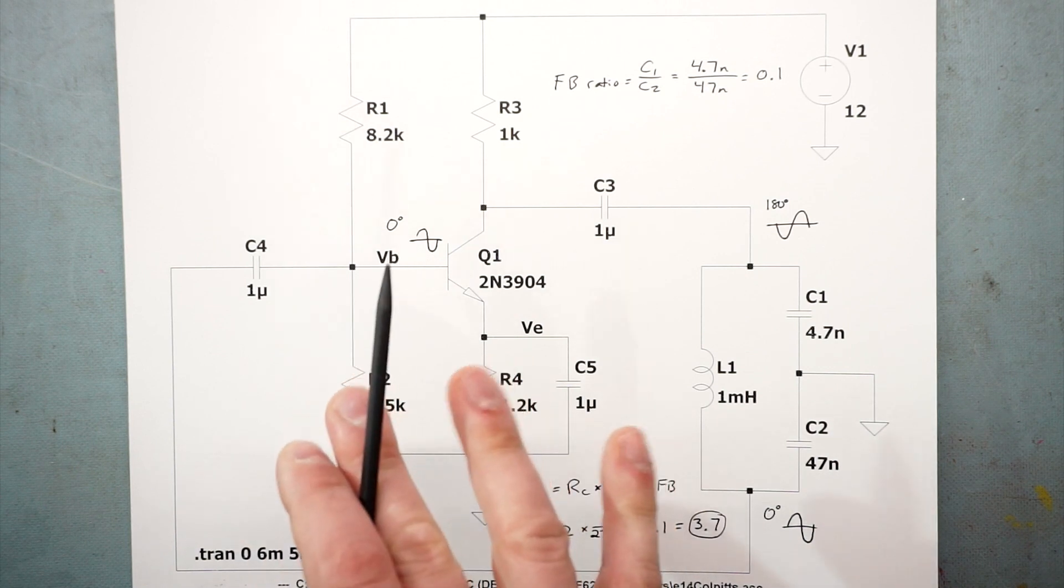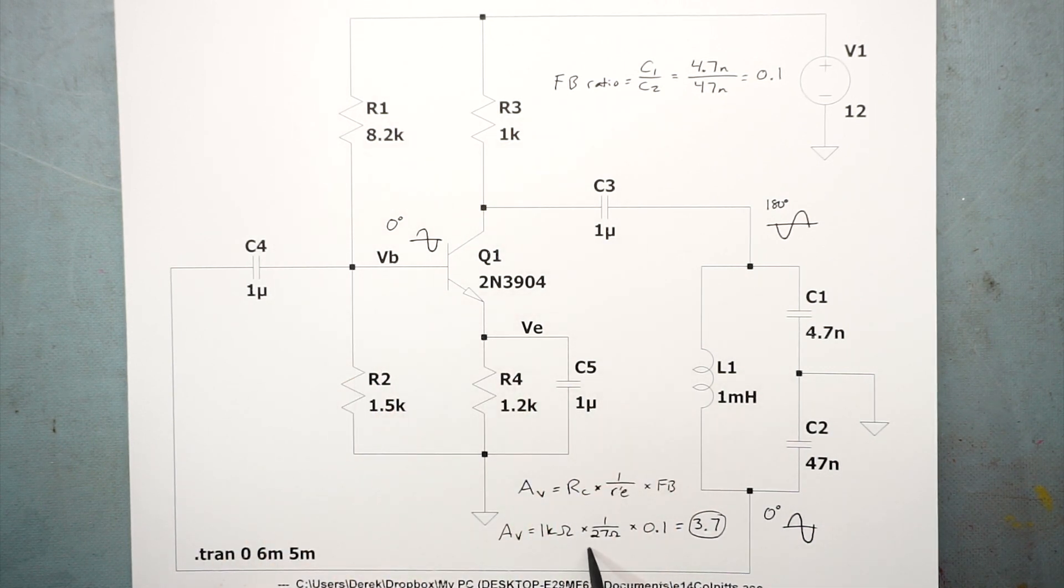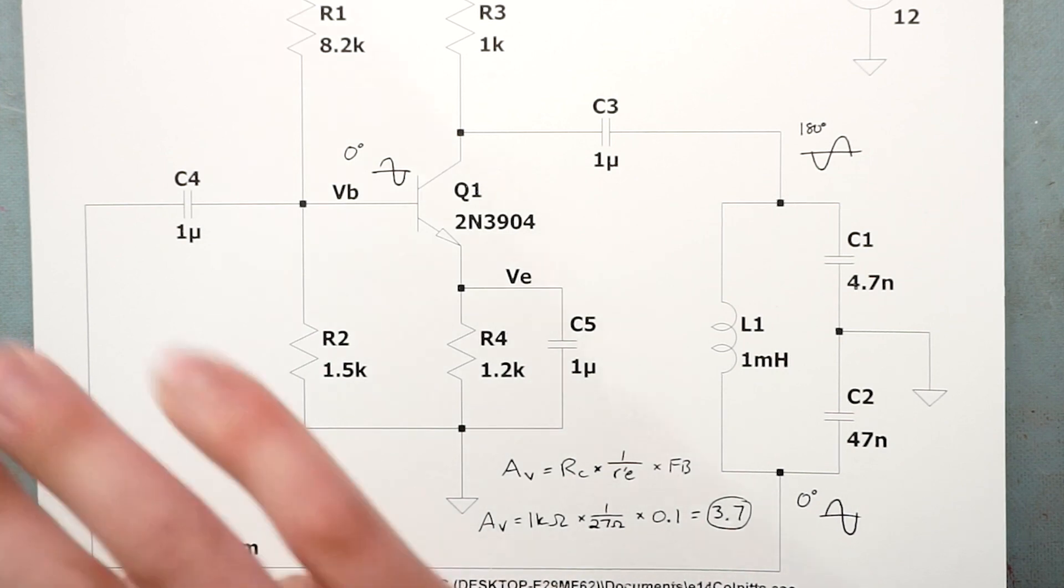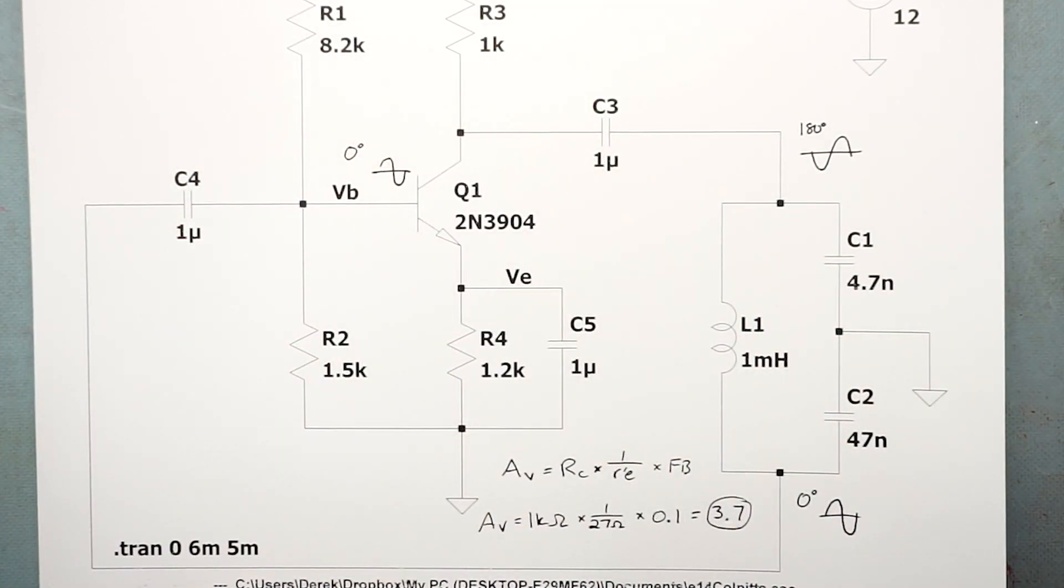But you might have to play with those values a little bit depending on what it does to the gain. Our gain of this amplifier is now our collector resistor multiplied by the inverse of R'E, which we said was 26, 26 or 27 ohms. That's actually called the conductance - collector resistor times the conductance times our feedback ratio. Our voltage gain is now 1k times 1 over 27 times 0.1, and now the overall gain of this closed loop positive feedback system becomes 3.7. So we're satisfying Barkhausen and we have an amplifier that should amplify. We have a tank circuit that should oscillate at the frequency we want or close to it.